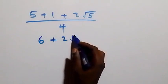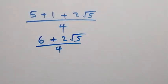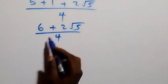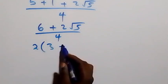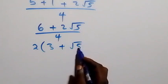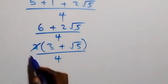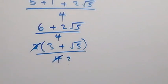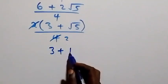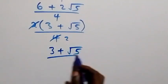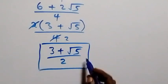5 plus 1 gives us 6, so we have 6 plus 2 root 5 over 4. We can factor 2 out of the numerator: 2 times bracket (3 plus root 5) over 4. The 2 cancels to give us the final answer: (3 plus root 5) over 2.